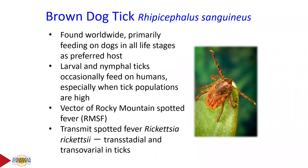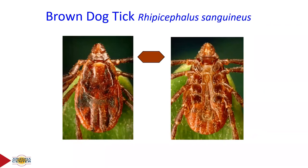The brown dog tick deserves special attention because it's so widely distributed and feeds on all stages of dogs. Larvae and nymphs occasionally feed on humans when populations are high and hosts are scarce. It transmits Rocky Mountain Spotted Fever both transovarially and transstadially. It's a hard tick with a visible scutellum — the hard plate on its back — and mouth parts visible from above.